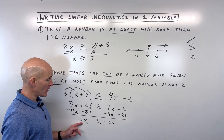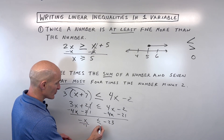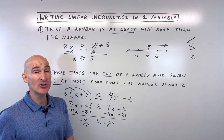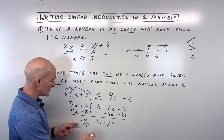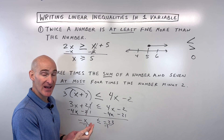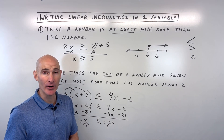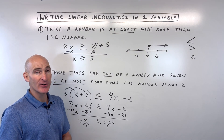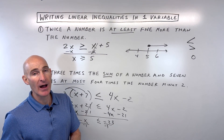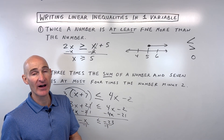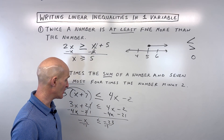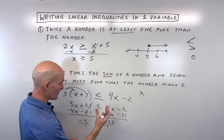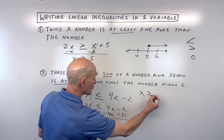Now we divide both sides by negative one — and this is an important distinction between equations and inequalities: when you multiply or divide both sides by a negative number, the inequality sign flips direction. It doesn't matter if there are negative numbers in the problem; it's only when you yourself multiply or divide both sides by a negative. If you add or subtract a negative, it doesn't change the sign. So x ≥ 23.